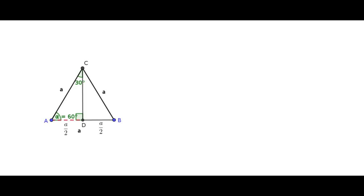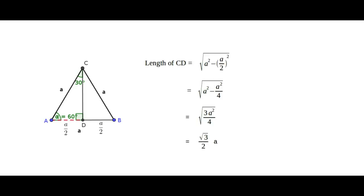To find the length of side CD, with the help of Pythagoras' theorem, if you substitute the data in the formula, we get the value as root 3 over 2 times A. So the length of CD is (√3/2)·A.